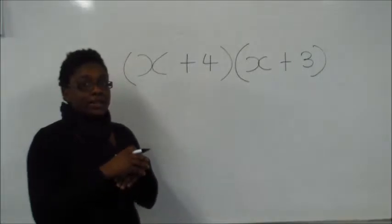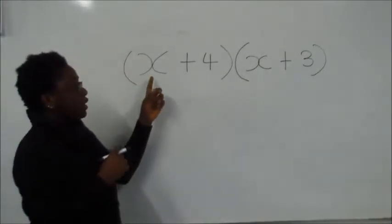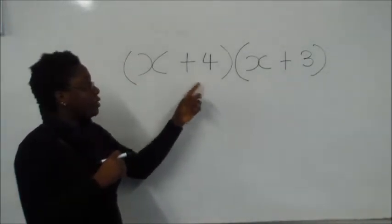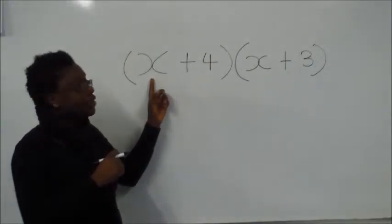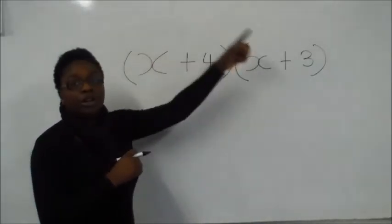To expand double brackets, take the first term in the first bracket and use it to times every single term on the other bracket.